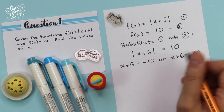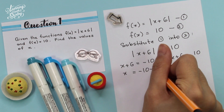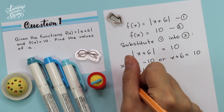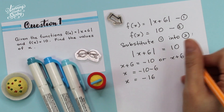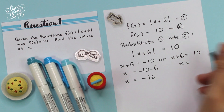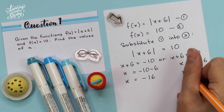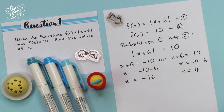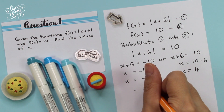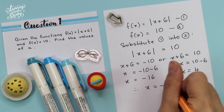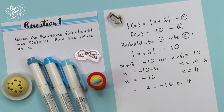We're going to solve these separately. For the first case, x equals negative 10 minus 6, so x equals negative 16. For the second case, x equals 10 minus 6, so x equals 4. We have two answers: x equals negative 16 or 4. This is the answer.